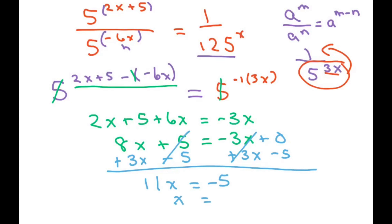So x equals negative 5 over 11. And that's it. Thank you. Have a nice day. Bye bye.